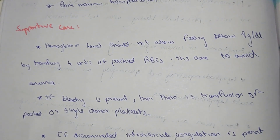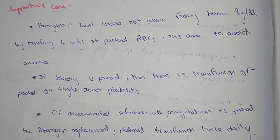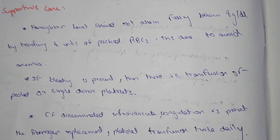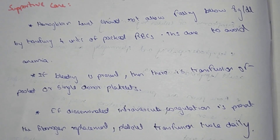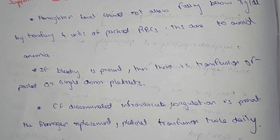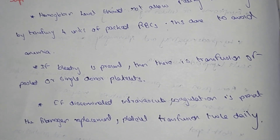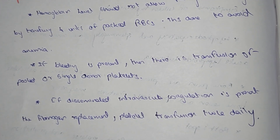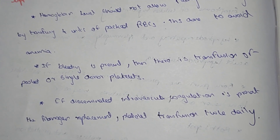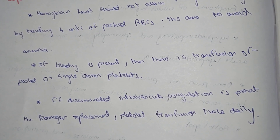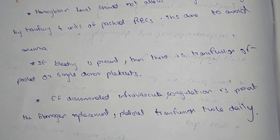Supportive care for acute leukemia includes maintaining hemoglobin levels above 8 g/dL by transfusing packed RBCs to avoid anemia. If bleeding is present, pooled or single-donor platelet transfusions are given. In disseminated intravascular coagulation, when small vessels become occluded and coagulated, replacement of fibrinogen or platelet transfusion twice a day is given.